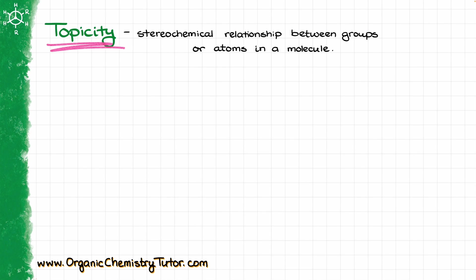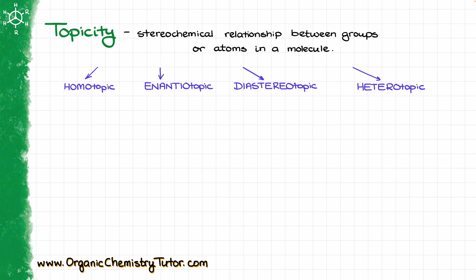Whenever we're talking about topicity in chemistry, we are referring to a stereochemical relationship either between the groups or the atoms in a molecule. There are four different types of relationships: our groups or atoms can be homotopic, they can be enantiotopic, they can be diastereotopic, or they can be heterotopic.